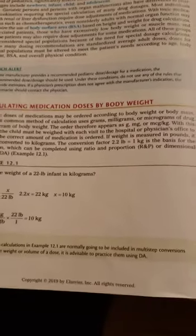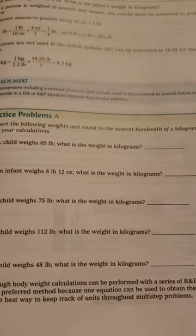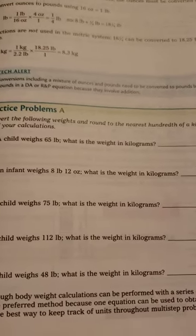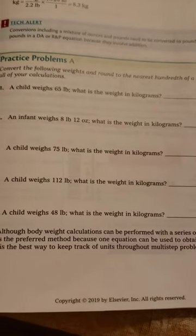Today we're going to look at Chapter 12. It's all about calculating medication by body weight for children or special adults that are not maybe normal height for weight, extra small or extra large.